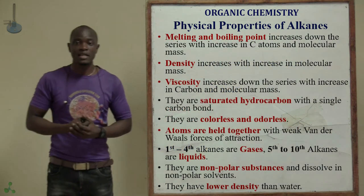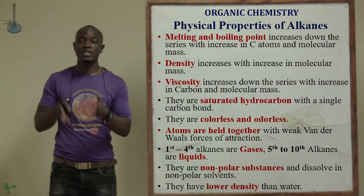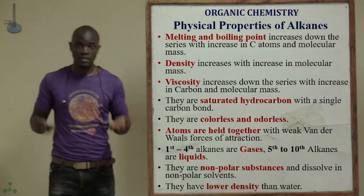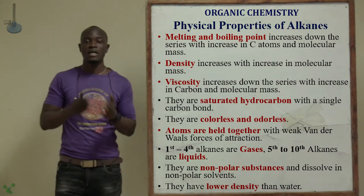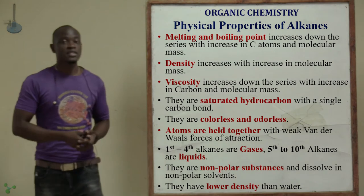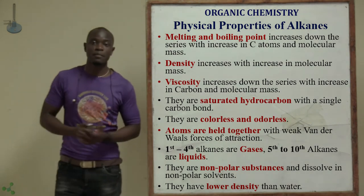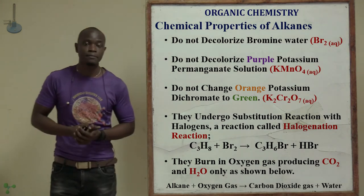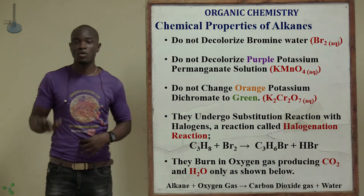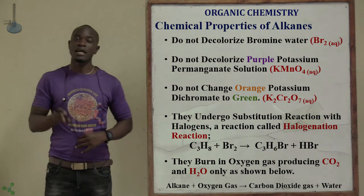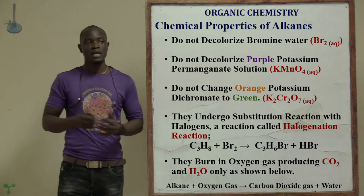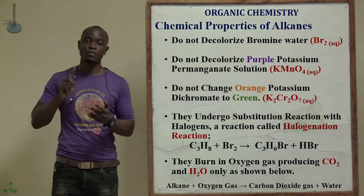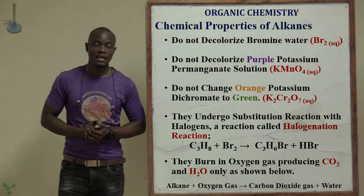Regarding density, alkanes have a lower density than water — water is much denser than the liquid alkanes. For chemical properties, alkanes undergo substitution reactions. They don't produce soot, and they don't decolorize bromine water, potassium permanganate, or potassium dichromate.